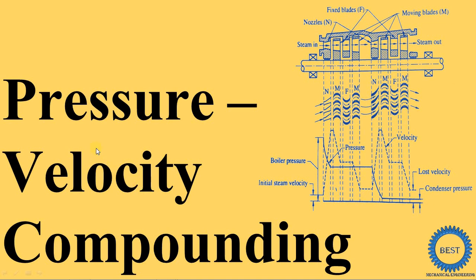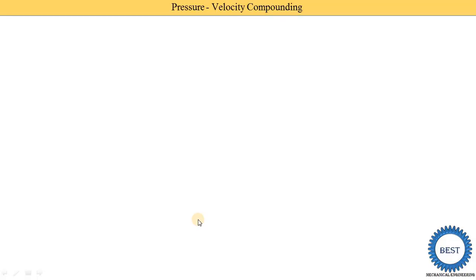In this video I explain pressure-velocity compounding, which is the combination of pressure and velocity compounding — that's why its name is given as pressure-velocity compounding. For drawing the diagram, we just need to connect two velocity compoundings in series, then we can achieve the pressure-velocity compounding.